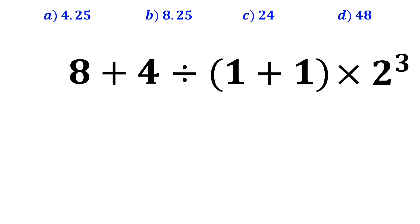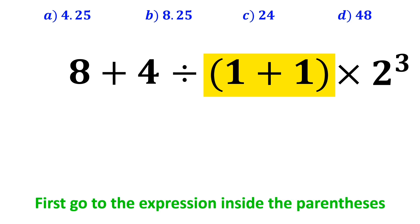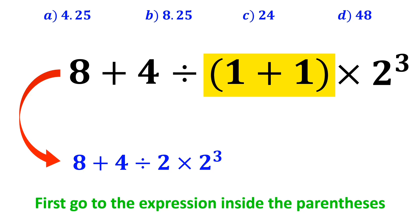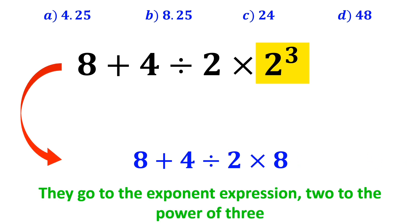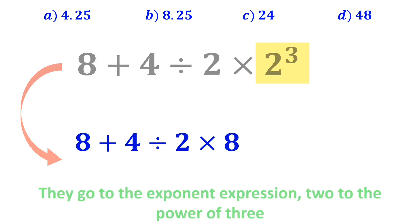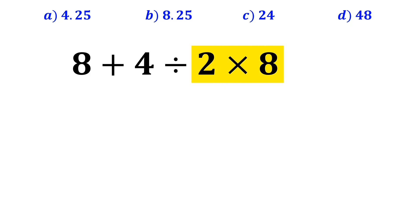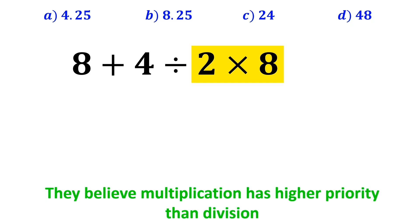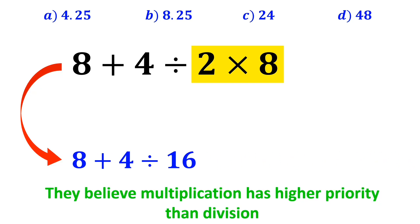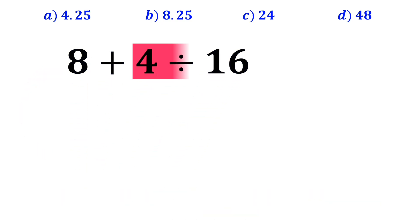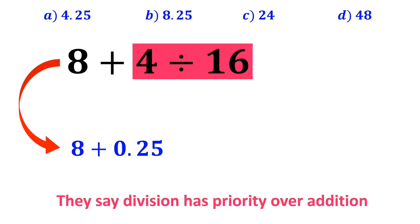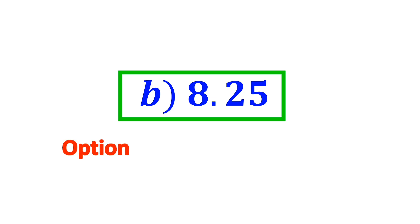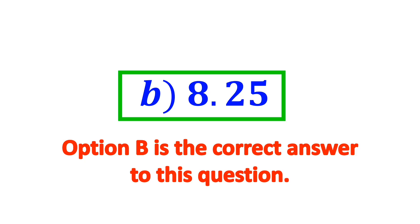Some other people first go to the expression inside the parenthesis and write 8 plus 4 divided by 2 times 2 to the power of 3. In the next step, they simplify 2 to the power of 3 to get 8 plus 4 divided by 2 times 8. Then, believing multiplication has higher priority than division, they write 8 plus 4 divided by 16. They perform the division between 4 and 16, getting 8 plus 0.25, which equals 8.25 — concluding option B is correct. However, this answer is also incorrect.